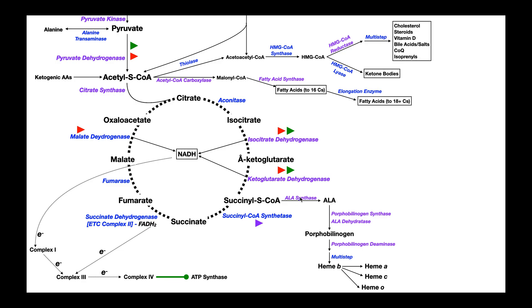This right here, ALA synthase, is the committed step in the synthesis of heme. Heme is an extremely important cofactor or coenzyme used by a lot of proteins and enzymes. Hemoglobin uses it. Myoglobin uses it. Several of the enzymes here in the electron transport chain have heme coenzymes. Heme and related compounds are ubiquitous across all domains of life and especially important in mammals.